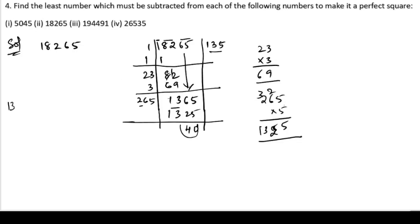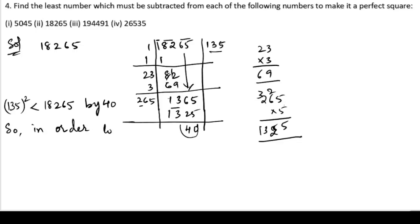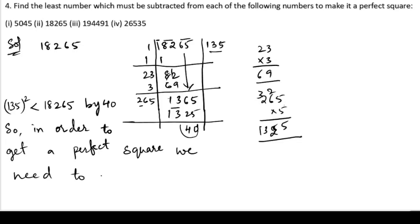The square of 135 is less than 118265 by 40. So in order to get a perfect square, we need to subtract 40 from 118265.